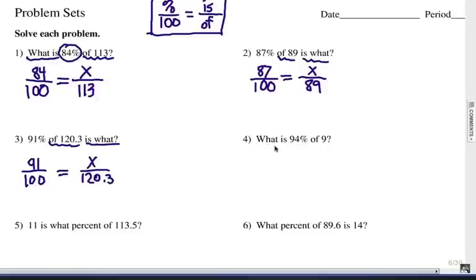Number four, what is 94% of 9? Well, remember, percent over 100, so percent's given as 94, 94 over 100. And is over of, is in this case here, it's unknown. And of is 9, so x over 9. All right, let's pause for a second. Go ahead and cross multiply and see if you can get the correct answers.